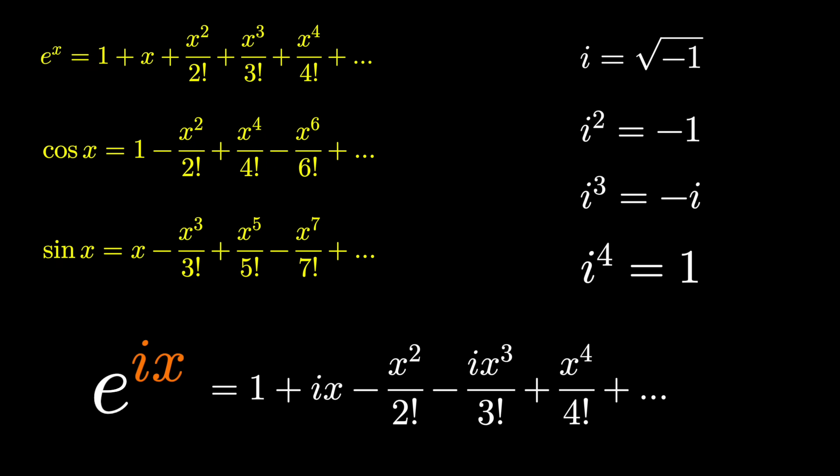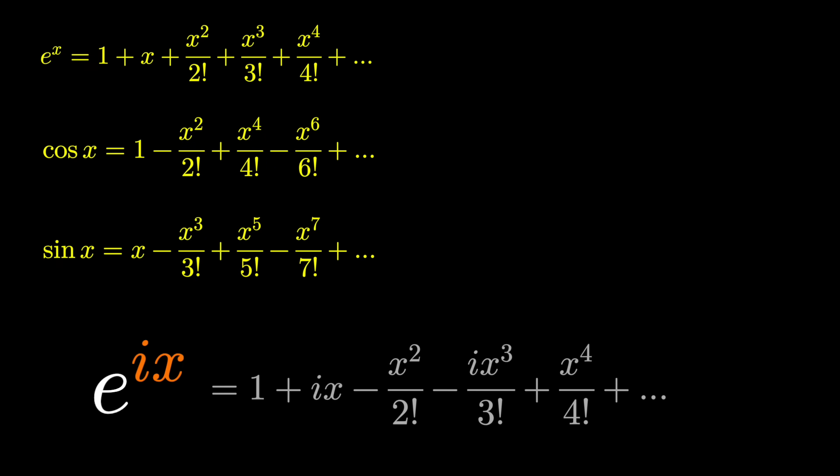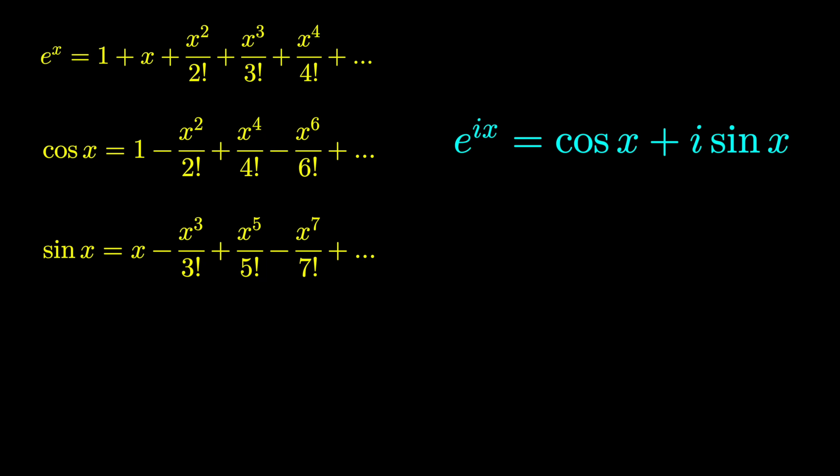The super interesting thing is, if we group the terms with the i's and without the i's, factoring out that i, it just turns into the representation for cosine x and sine x. And so e to the ix equals cosine x plus i sine x. This is known as Euler's formula.